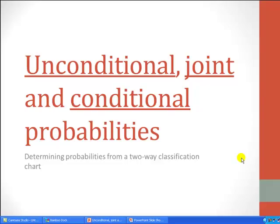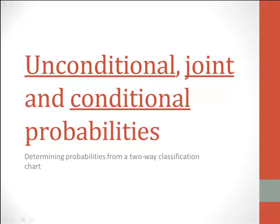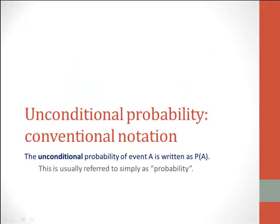In today's lesson, we are going to learn how to compute or determine unconditional, joint, and conditional probabilities. In particular, we are going to see how to determine these probabilities from a two-way classification chart. Let us start with unconditional probabilities.